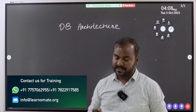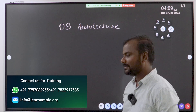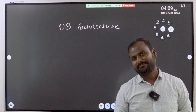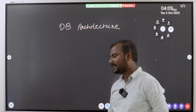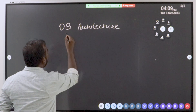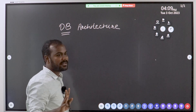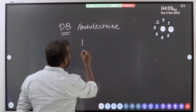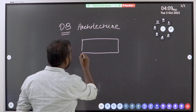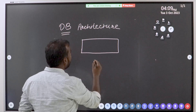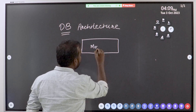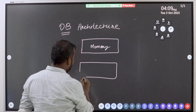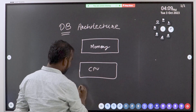In today's lecture we'll understand Oracle database architecture. Whenever you go for any new technology, first you should understand the architecture. In Oracle database architecture, there are three components playing a very important role: the first component is memory, the second is CPU, and the third is storage.